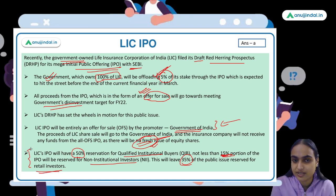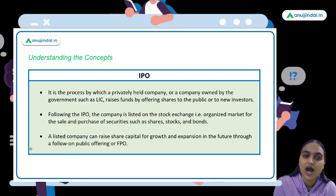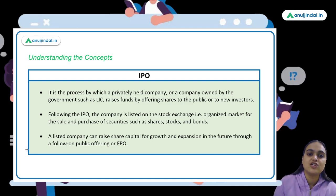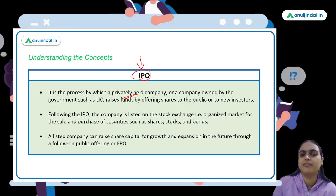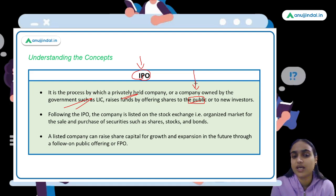Now let's discuss the concepts: IPO, Offer for Sale, Draft Red Herring Prospectus, and three different types of investors. An IPO — Initial Public Offering — is basically a process by which a company gets listed to raise funding from the public. Whether it's a privately held firm or a government company like LIC, when it raises funds by offering shares to the public for the first time, that's an IPO. The company then gets listed on the stock exchange — the organized market where securities like stocks, shares, and bonds are bought and sold.